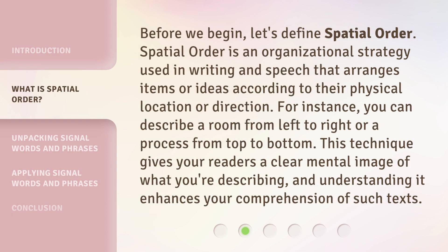Before we begin, let's define spatial order. Spatial order is an organizational strategy used in writing and speech that arranges items or ideas according to their physical location or direction. For instance, you can describe a room from left to right or a process from top to bottom. This technique gives your readers a clear mental image of what you're describing, and understanding it enhances your comprehension of such texts.